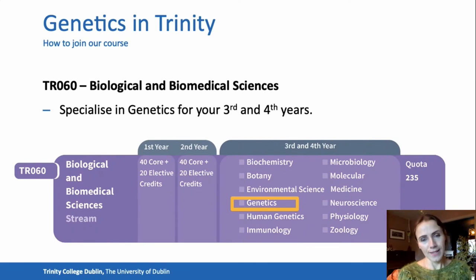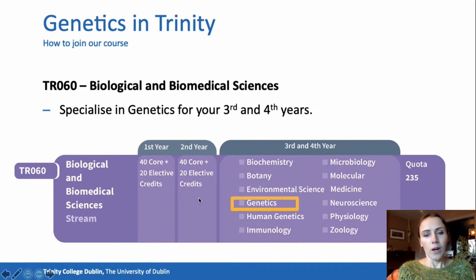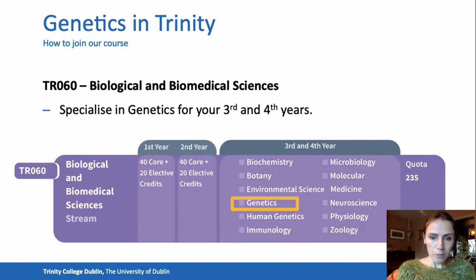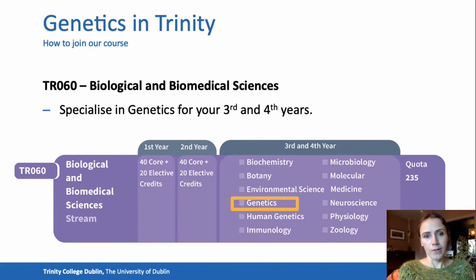If you did want to study genetics in Trinity, the way to do that is to first join the Biological and Biomedical Sciences course, and then genetics is one of the options available to you for specialising in your third and fourth year. There's also human genetics, which is another course offered by our department, and there's another video about that course.